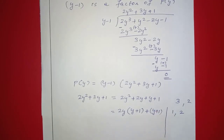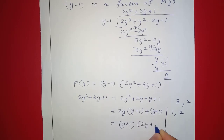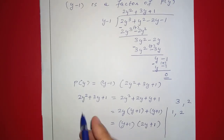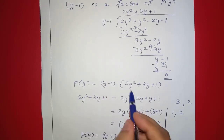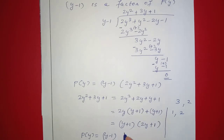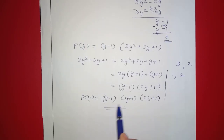Taking 2y common from first two terms: 2y times y plus 1. Then 1 common from last two terms: 1 times y plus 1. So y plus 1 is common: y plus 1 times 2y plus 1. Therefore P of y equals y minus 1 times y plus 1 times 2y plus 1.